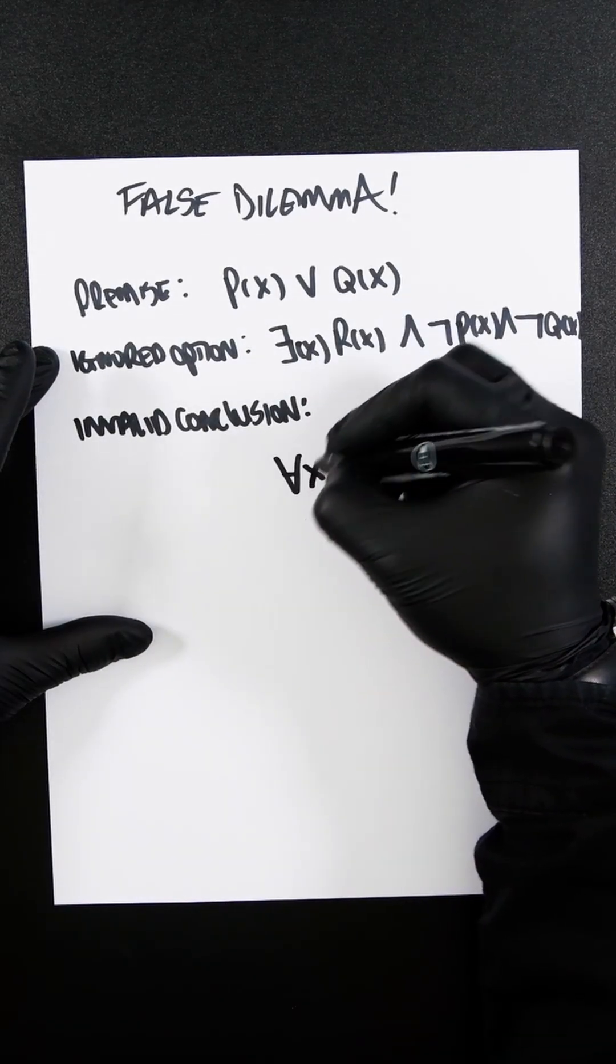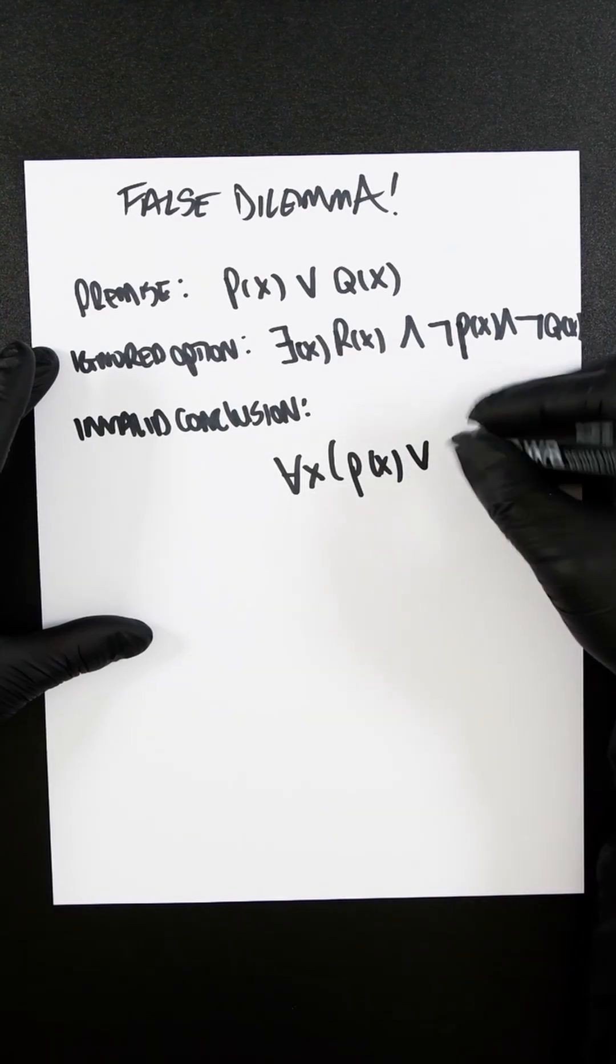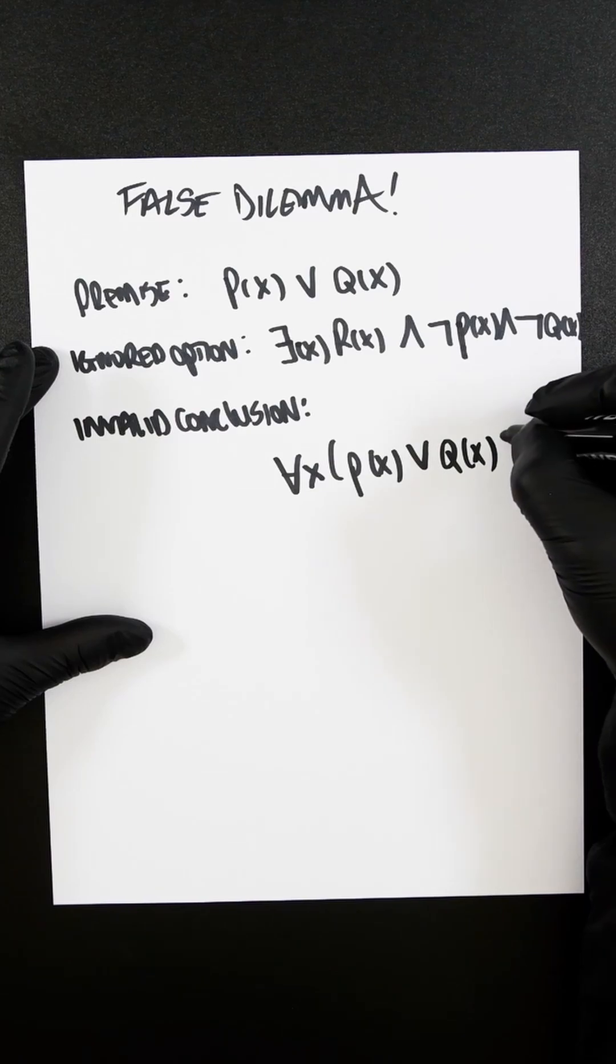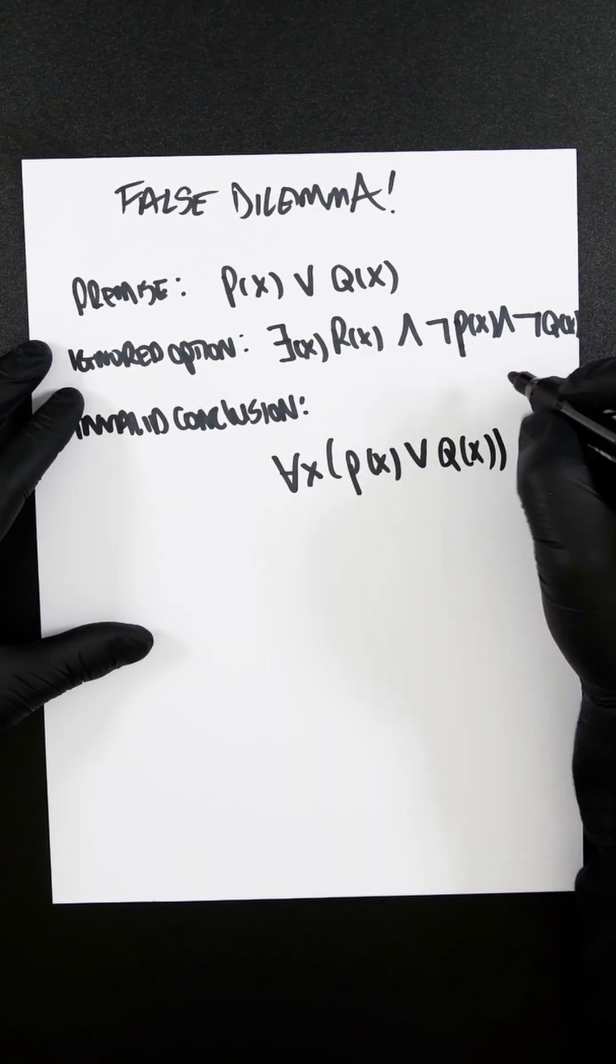...conclusion is that there exists x P of x or Q of x. I think I said there exists, I meant for all x, I shouldn't have said there exists. So the argument...